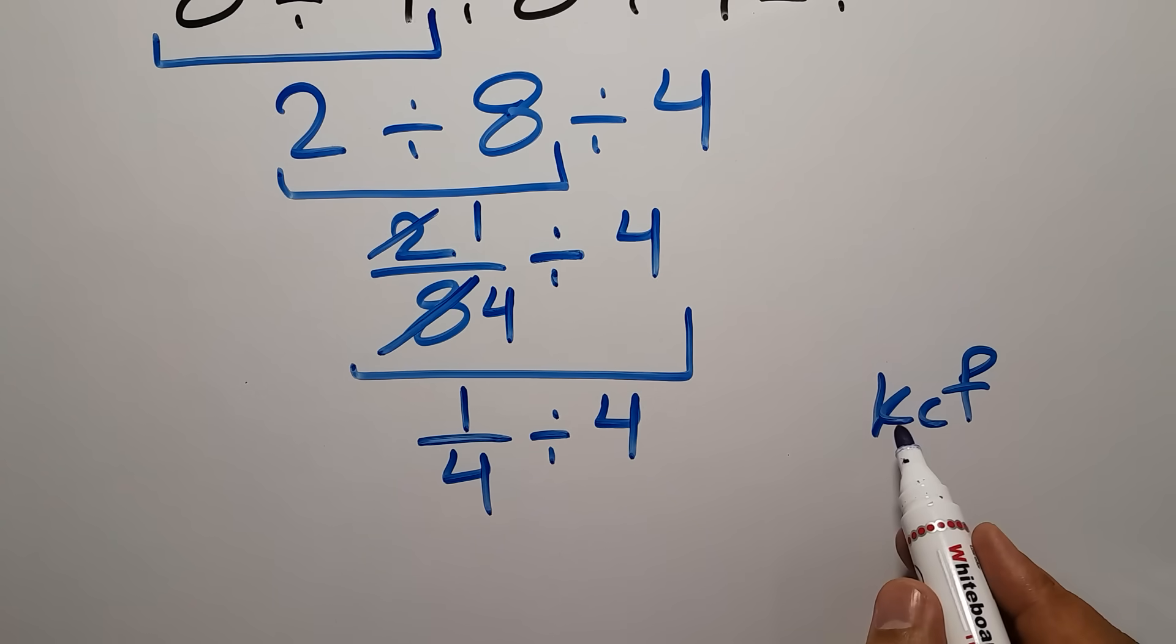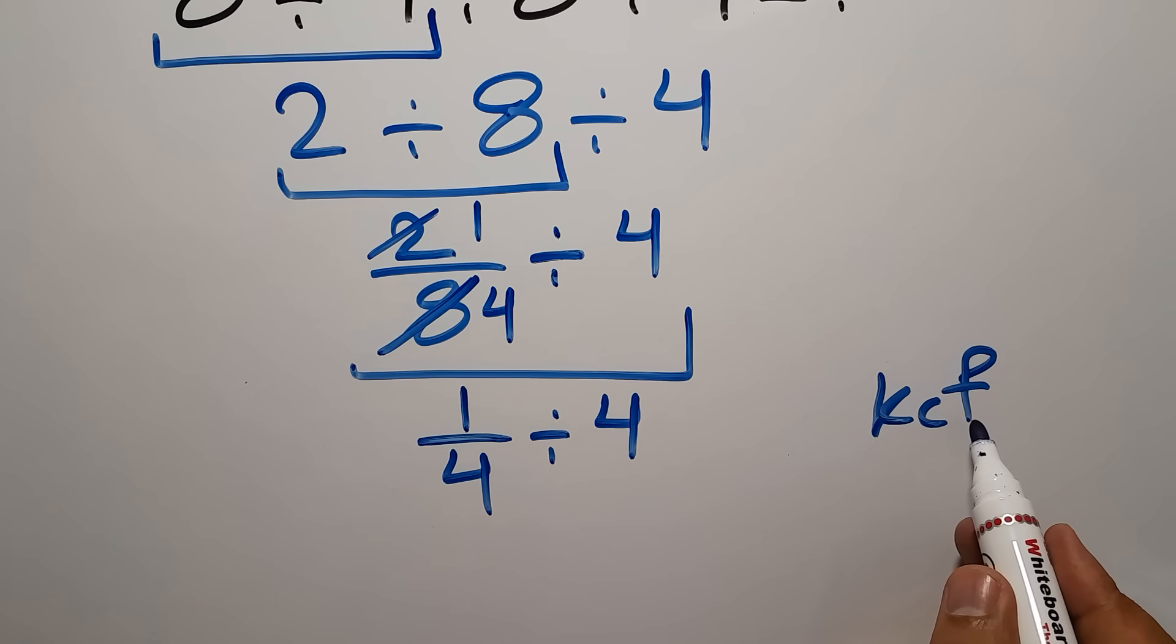K stands for keep, C stands for change, and F stands for flip. Keep the first fraction, change division to multiplication, and flip the second fraction.